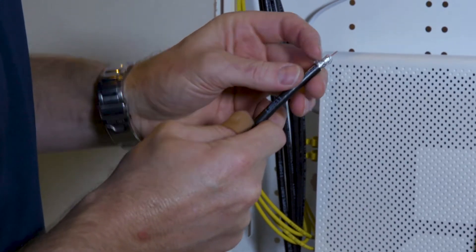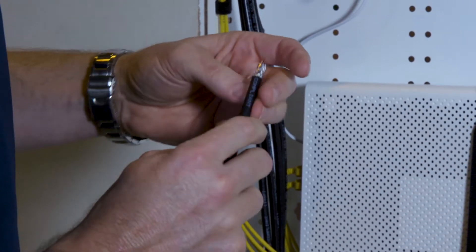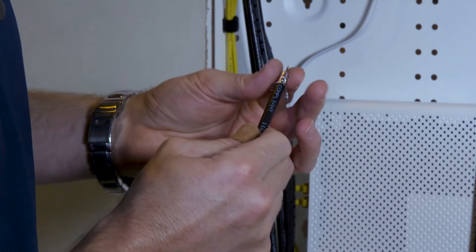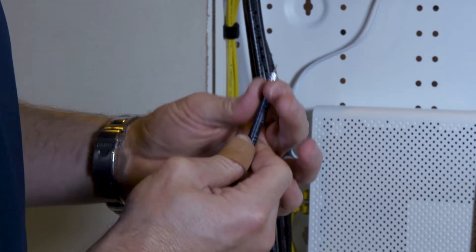Take your braid that's remaining and fold it back. Remember that there are two. This is quad shield. There are two layers of braiding in here. You're only going to worry about the outer one.